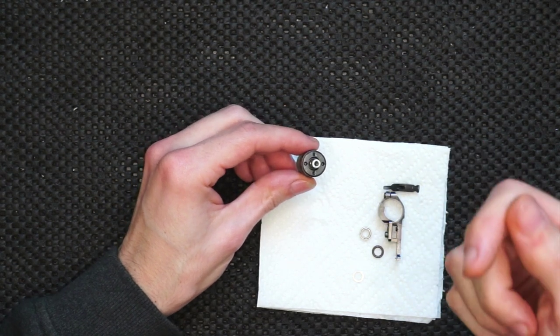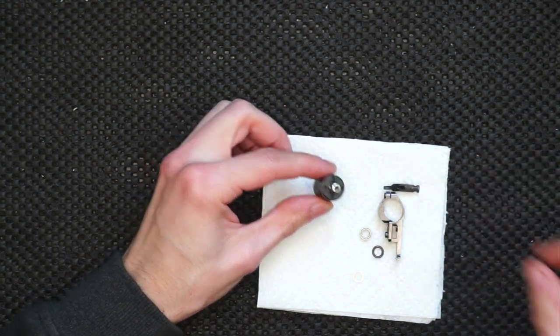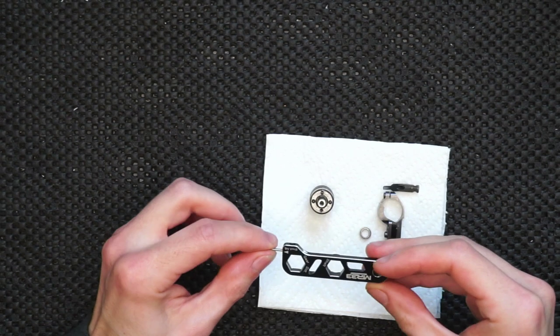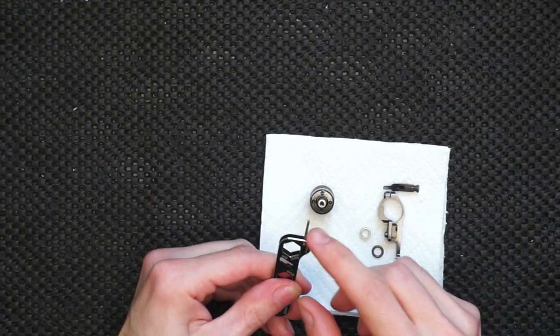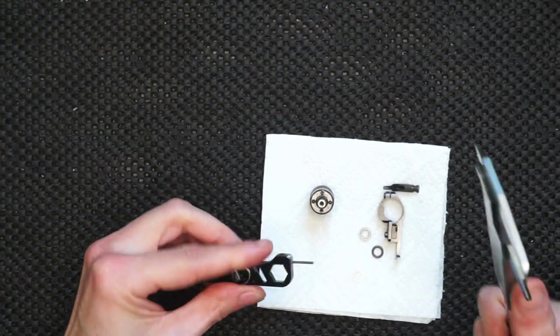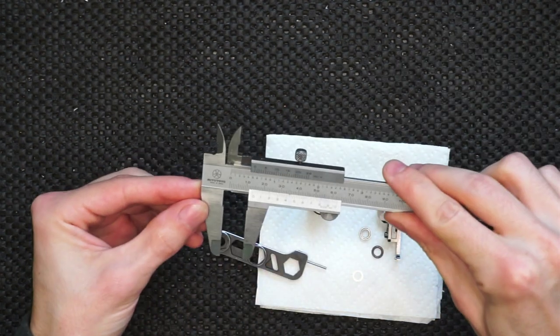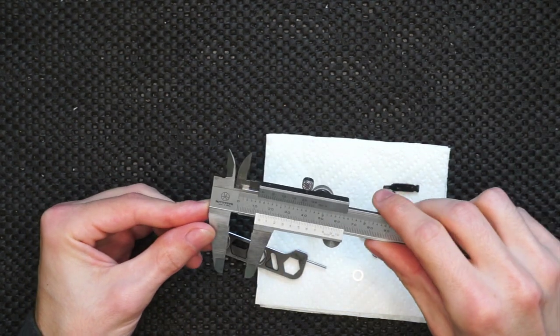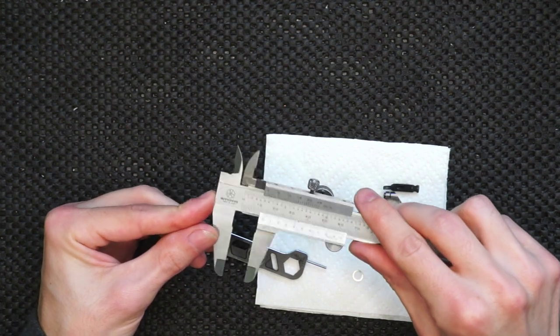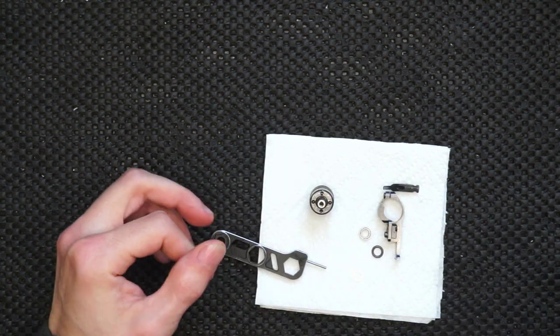And now we want to check the depth of the piston. You can use this MR33 tool with the little probe set at exactly 13.5 millimeters, or any kind of probe like a toothpick with a mark on it will do a perfectly fine job.